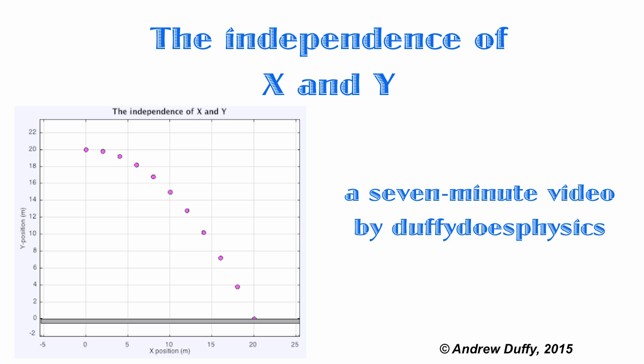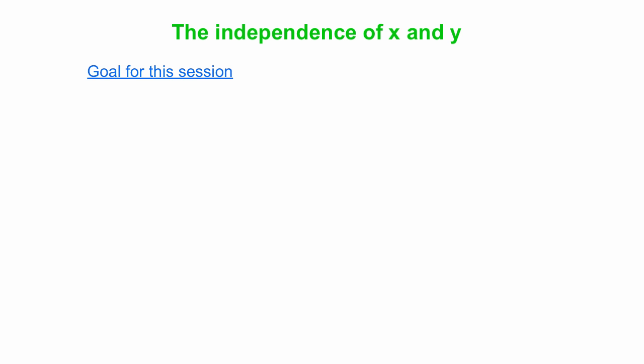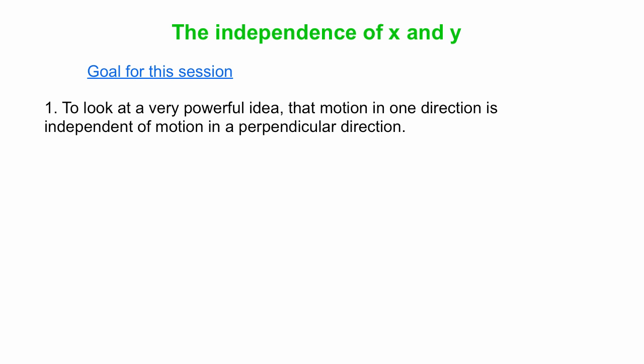The independence of x and y. We have just one goal for this session. This is a very important topic. It's a very powerful idea we're looking at: the idea that motion in one direction is independent of motion in a perpendicular direction. That's what we call the independence of x and y, x and y being two different directions.